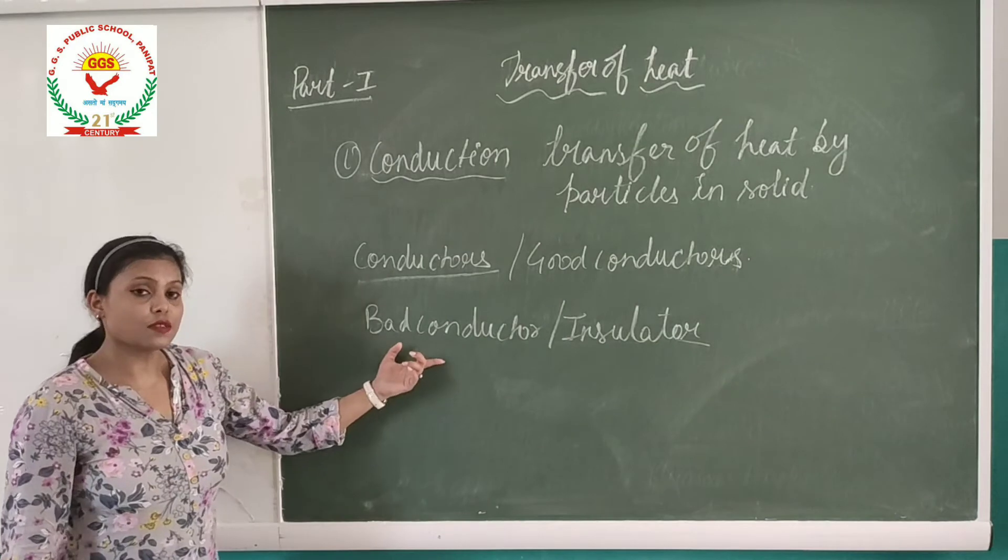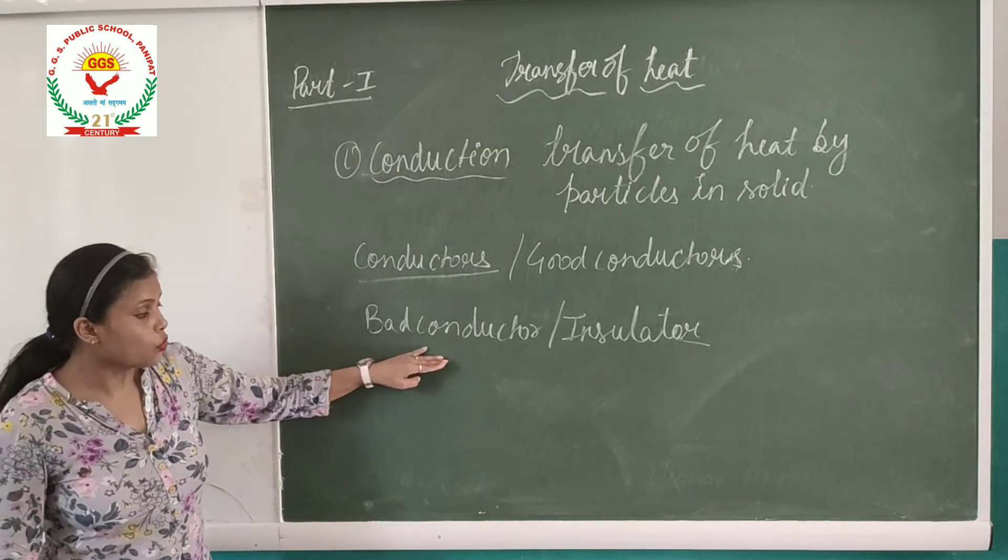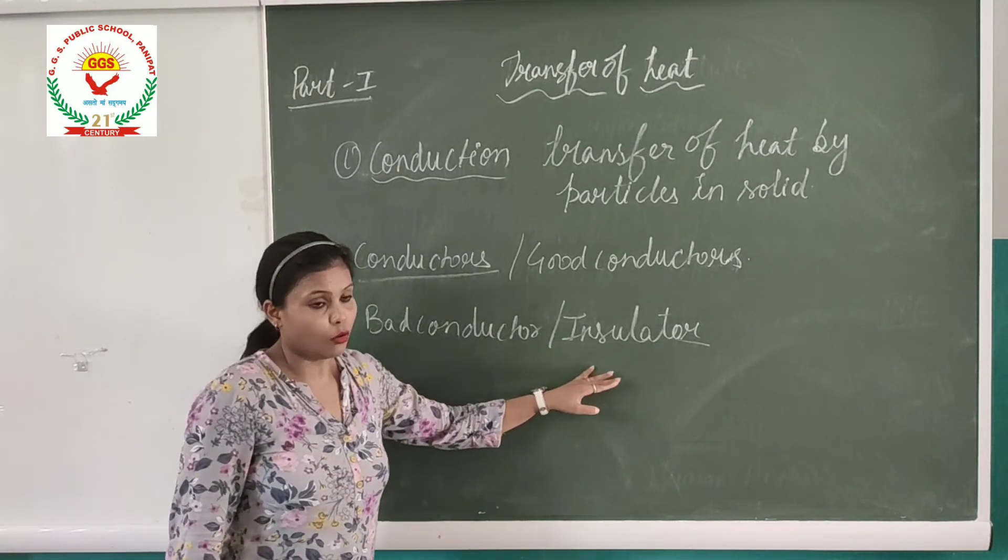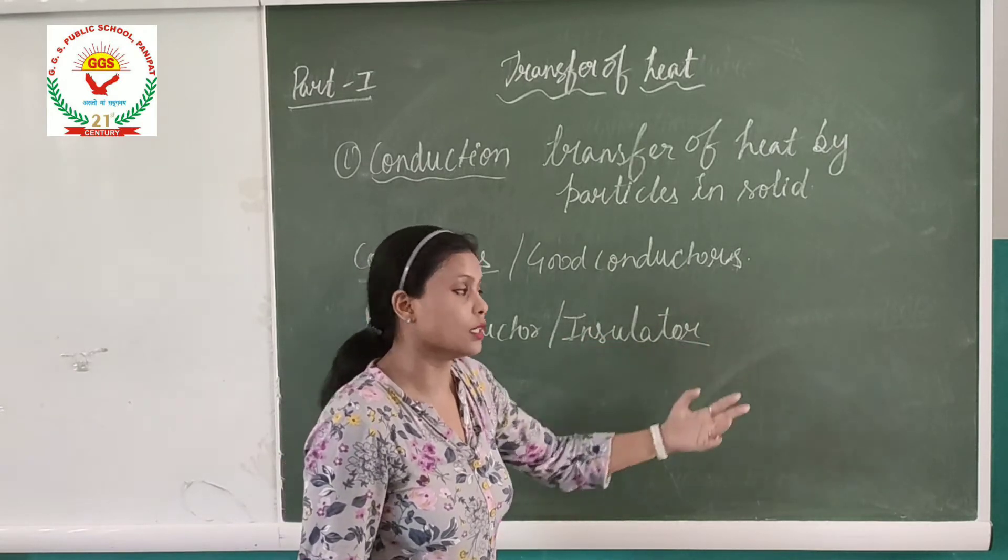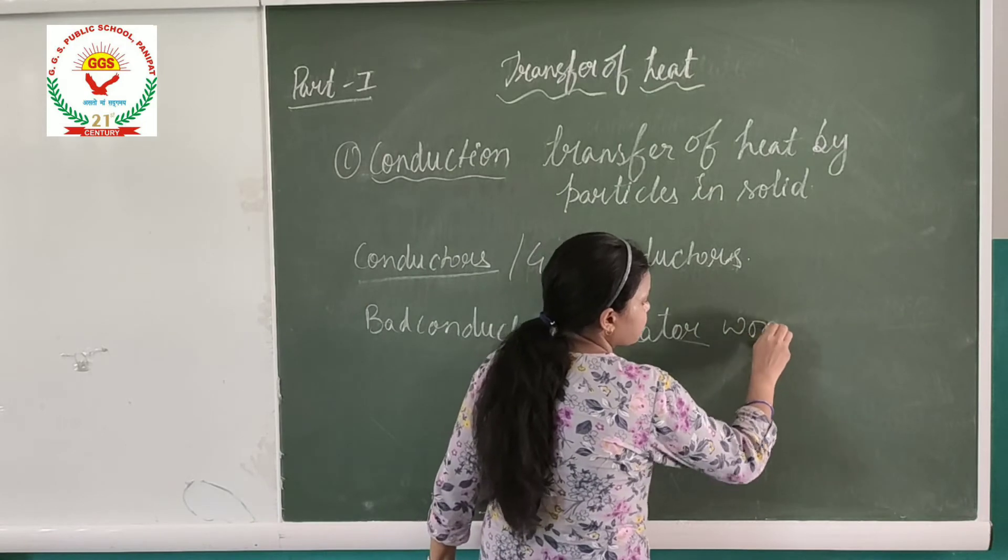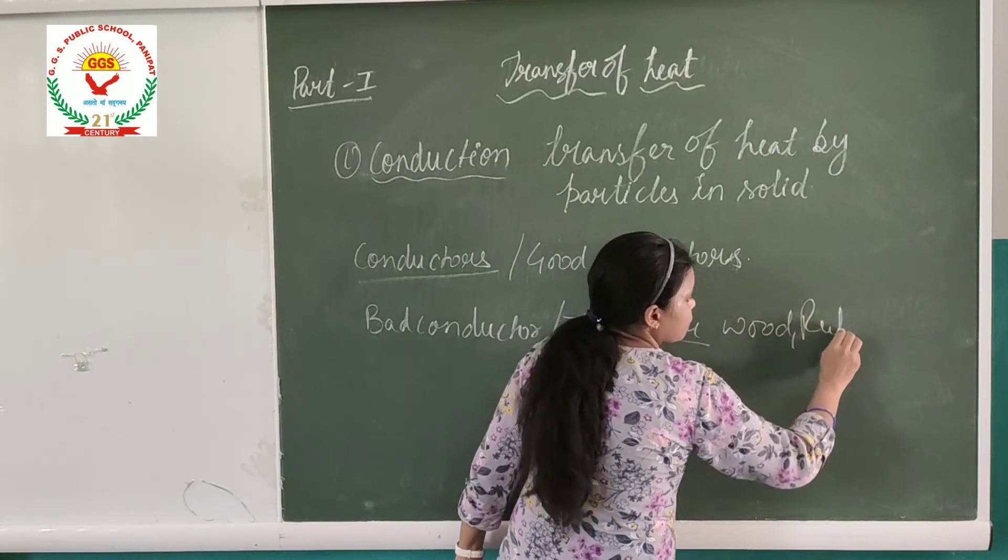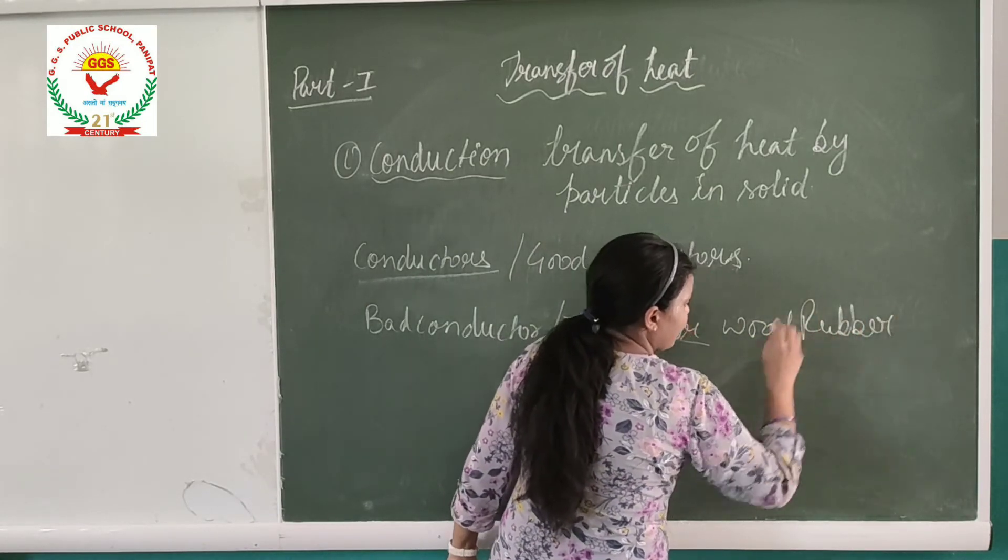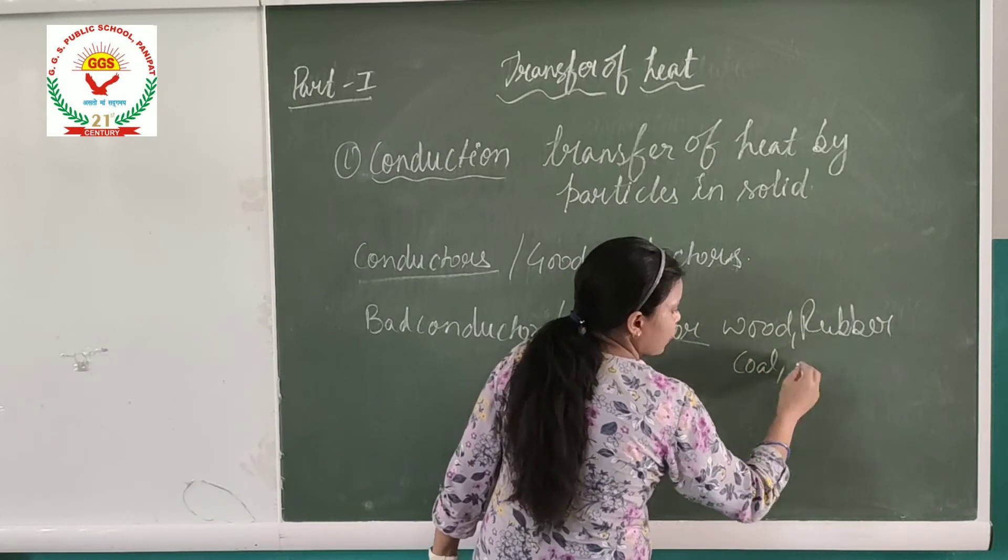What are these bad conductors? Those materials which do not allow heat to transfer from one body to another are known as insulators, like wood, rubber, coal, etc.